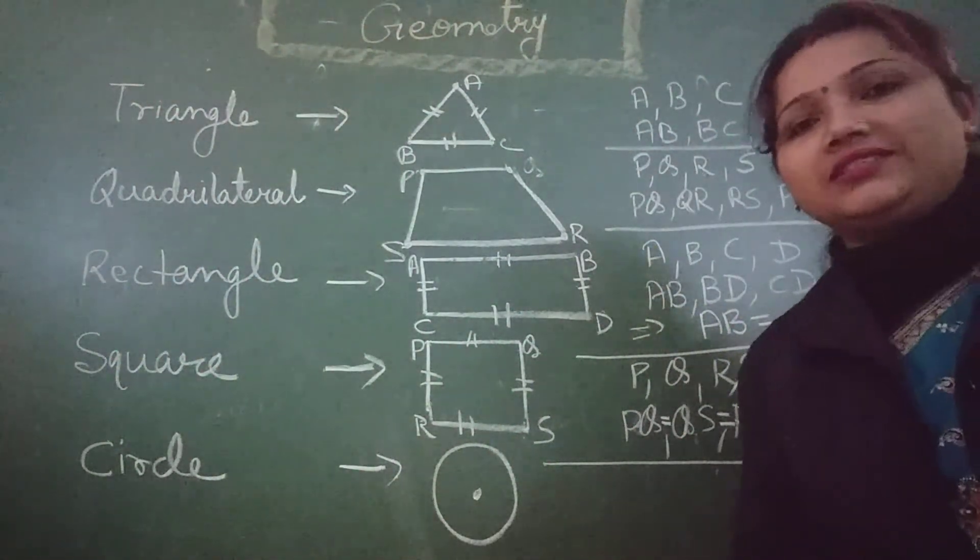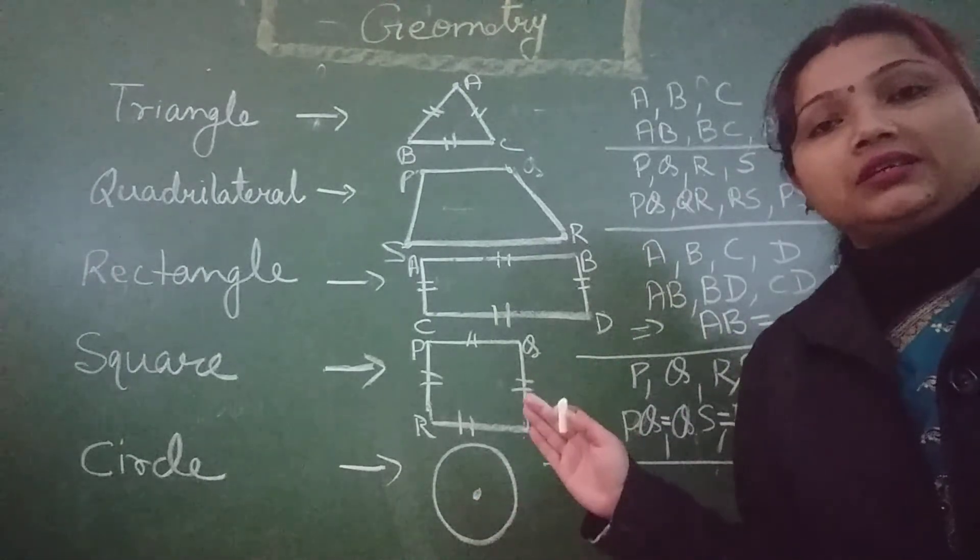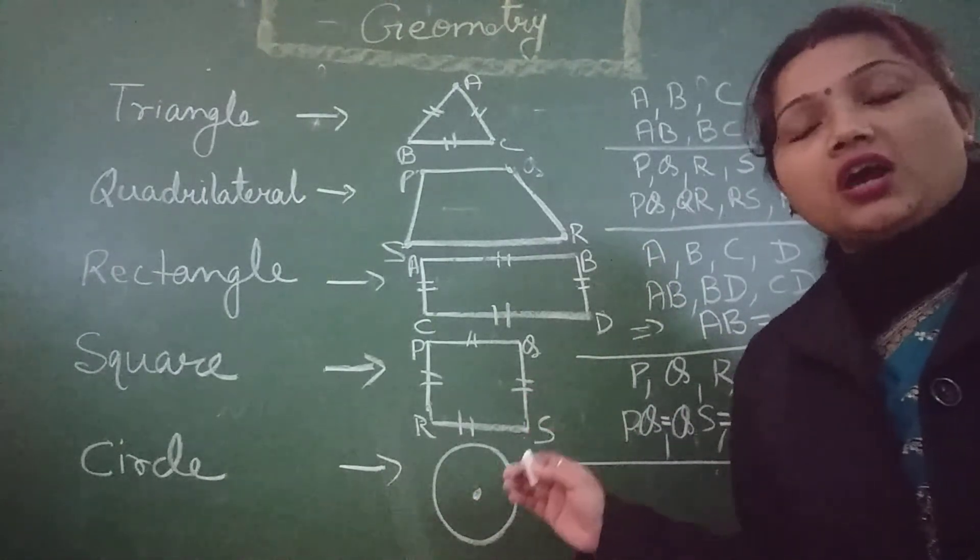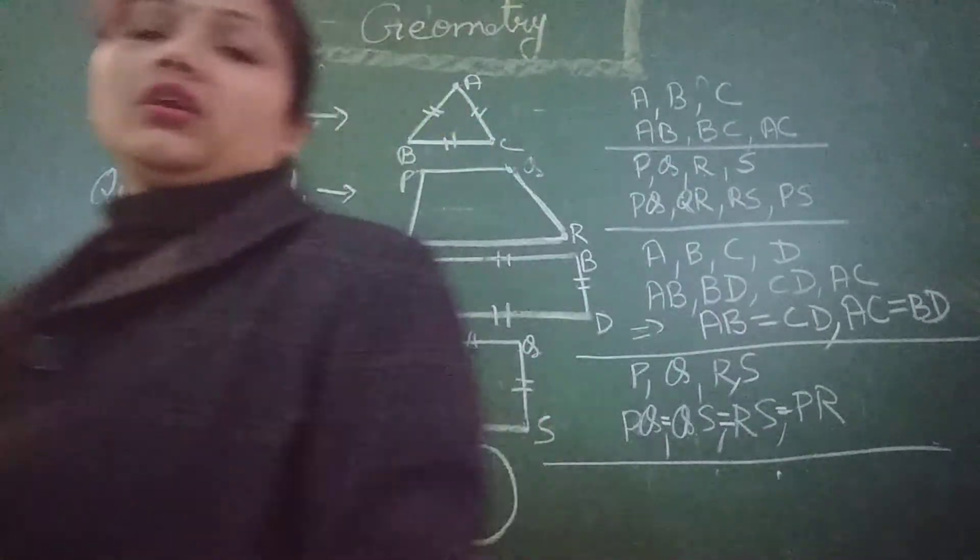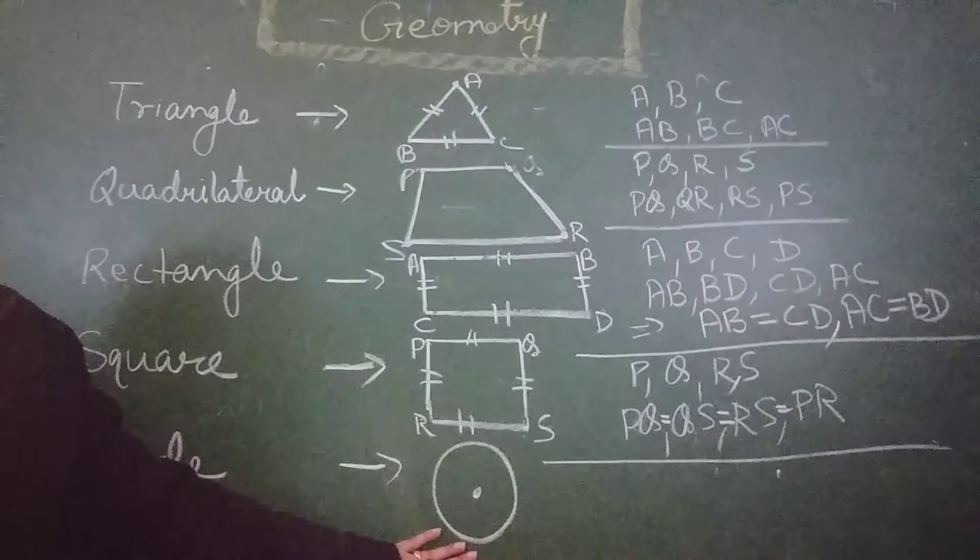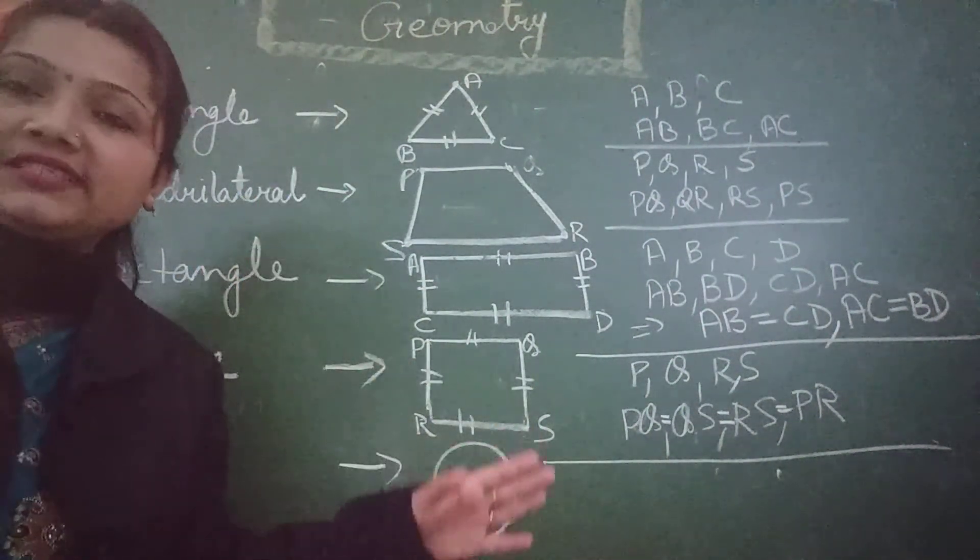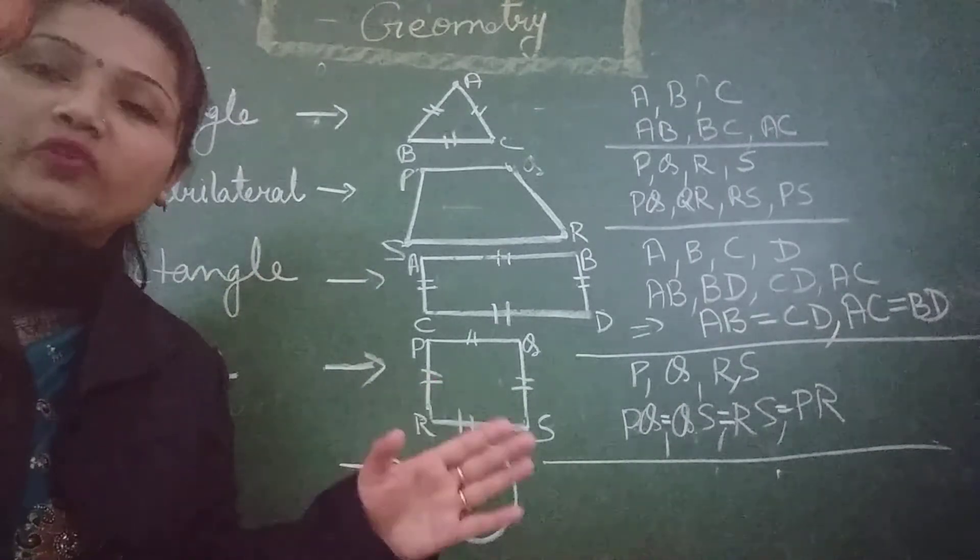Okay. Now, the last one is the circle. Circle is a round shape figure, round plane figure. It is round in shape. It has no length, no sides and no vertices.